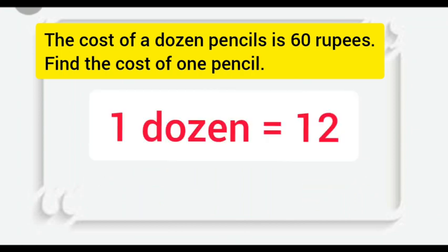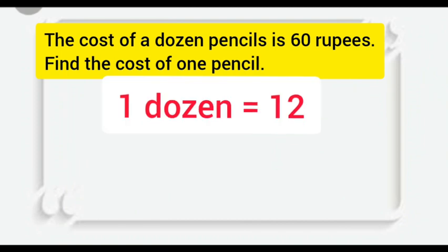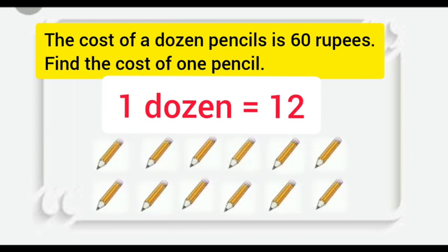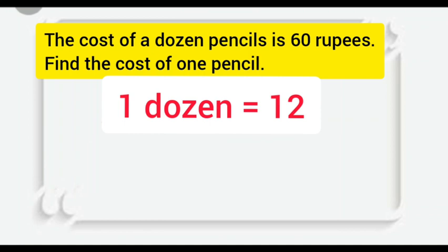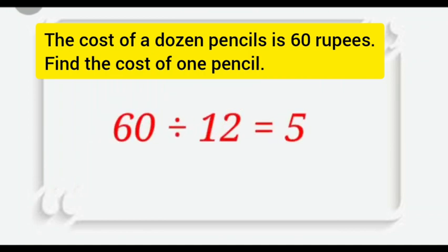First thing, 1 dozen is equal to 12. Here, cost of 12 things is given. And when we know the cost of more than 1 things, and we have to find the cost of 1 thing, that means we have to divide there. Yes. Here, we will do division. We will divide the cost of 12 pencils by the number of pencils.